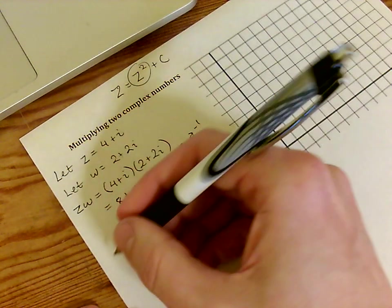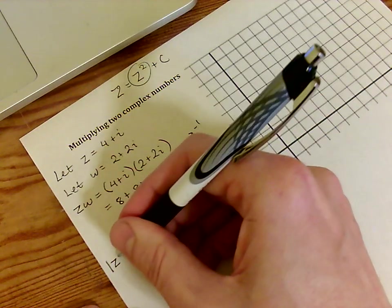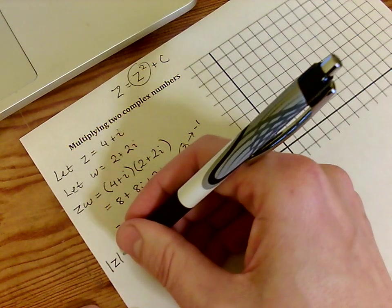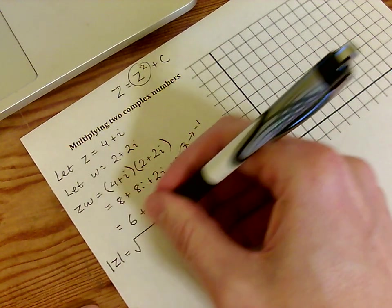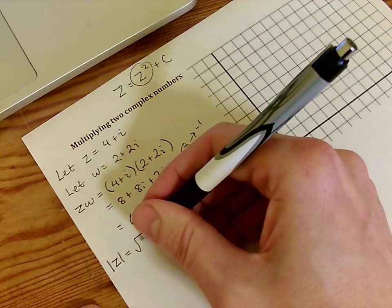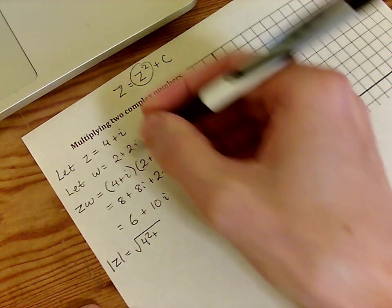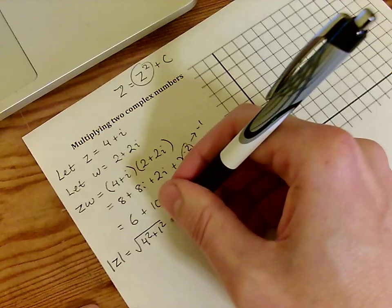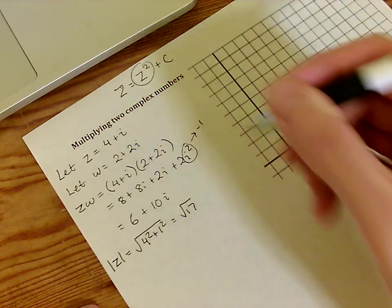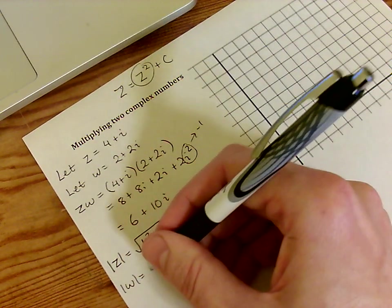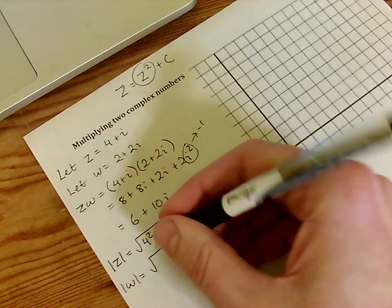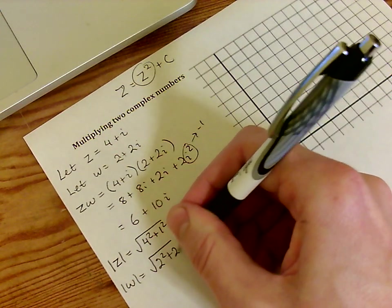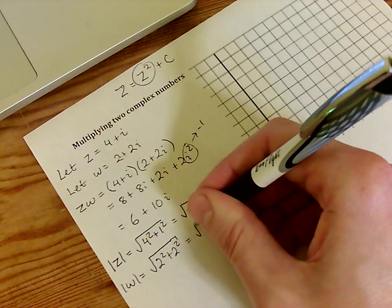Let's now compute the absolute value of z, w, and z times w. Well, the absolute value of z is the square root of its real part squared, plus its imaginary part squared, which gives us root 17. The absolute value of w is the square root of 2 squared plus 2 squared, which is the square root of 8.